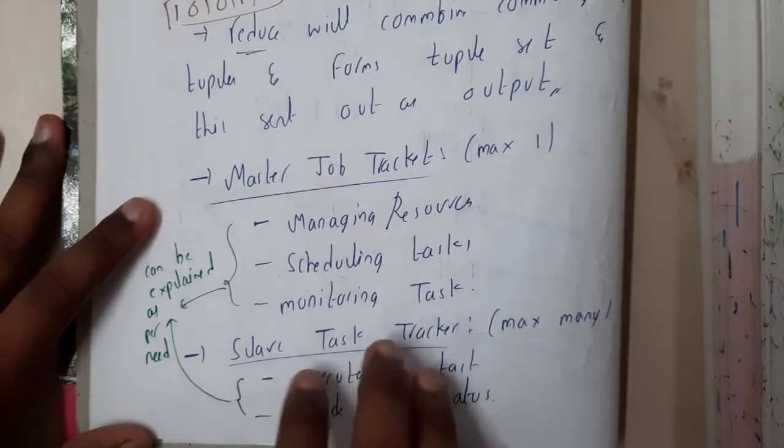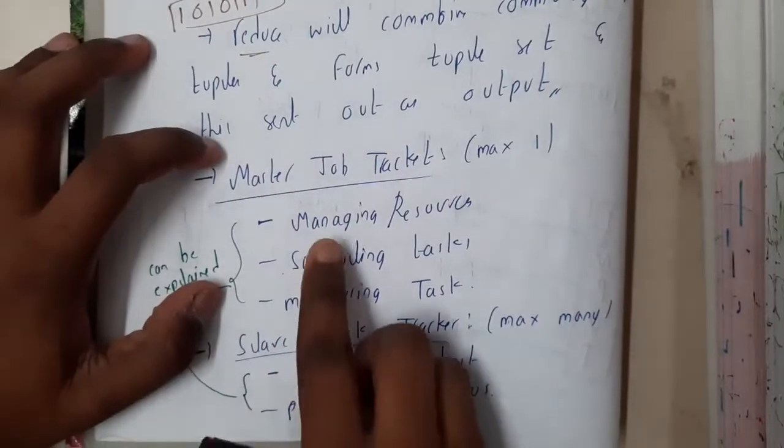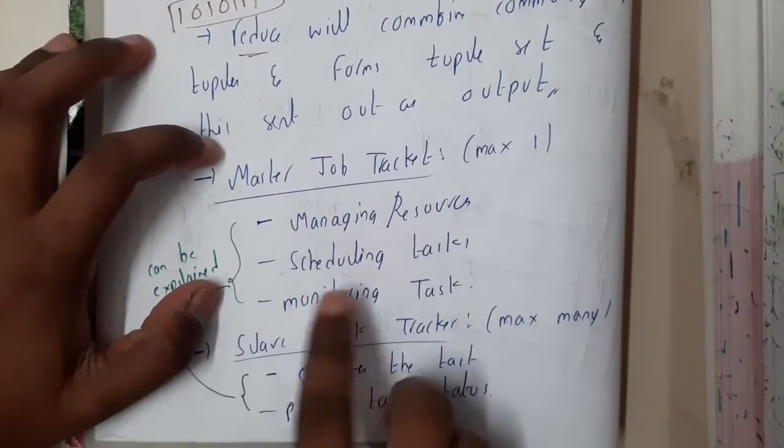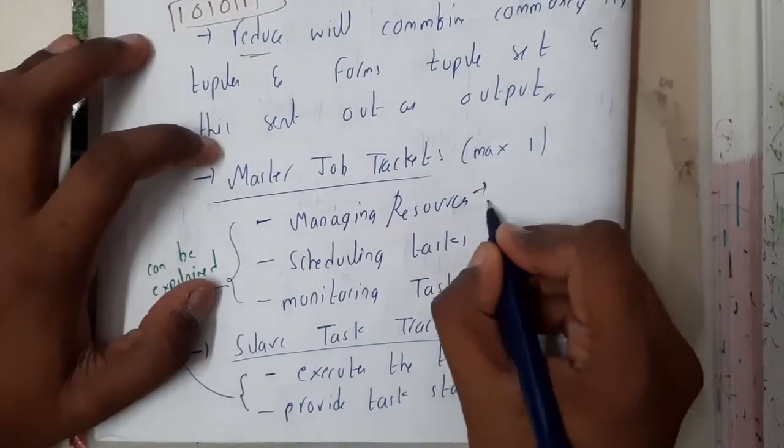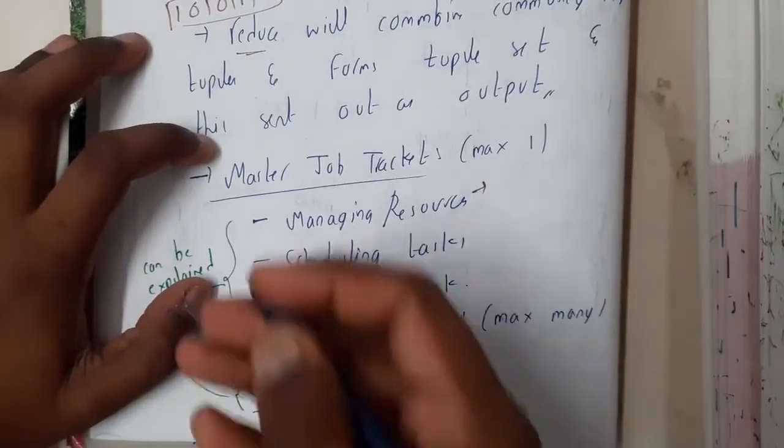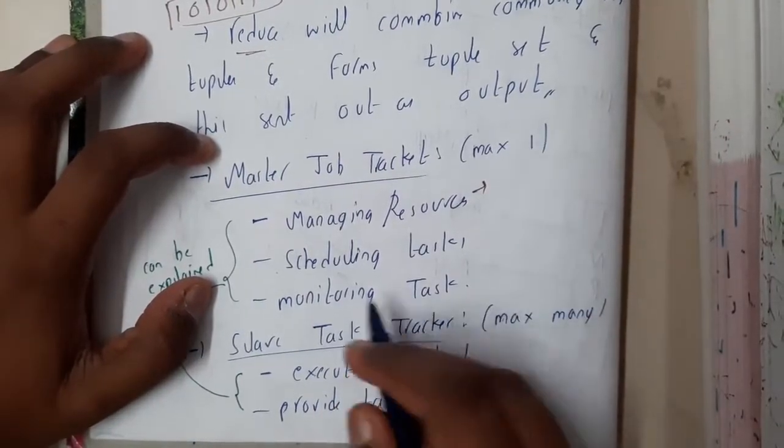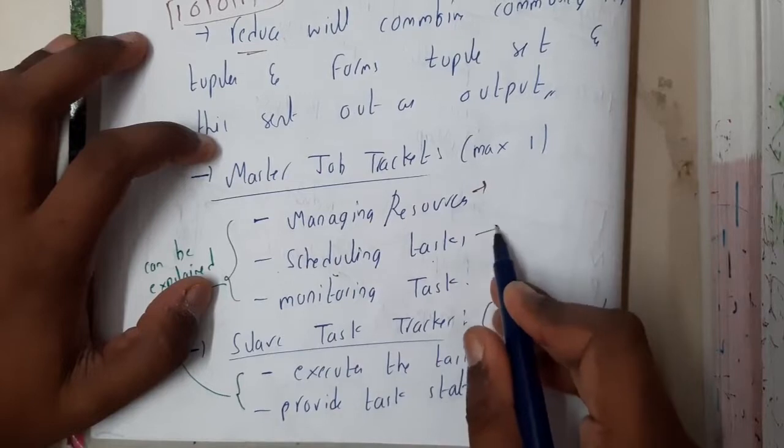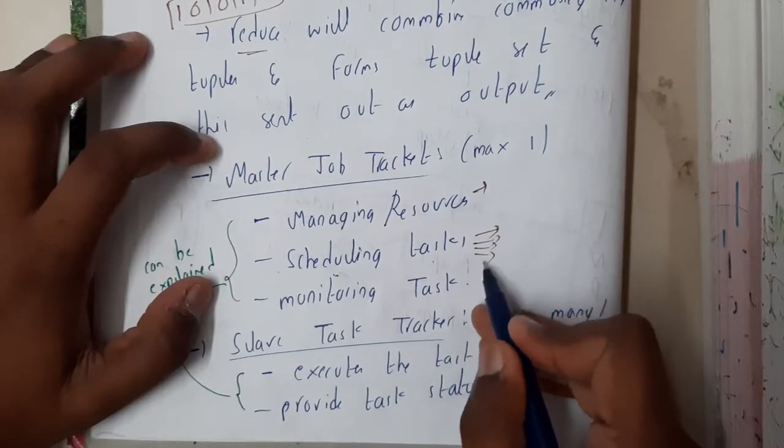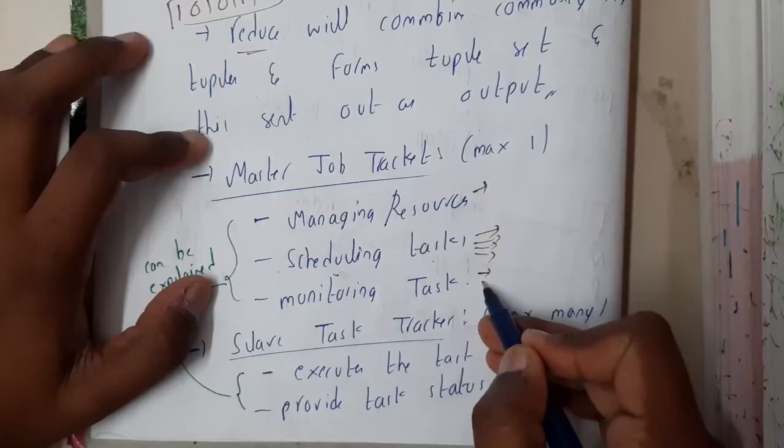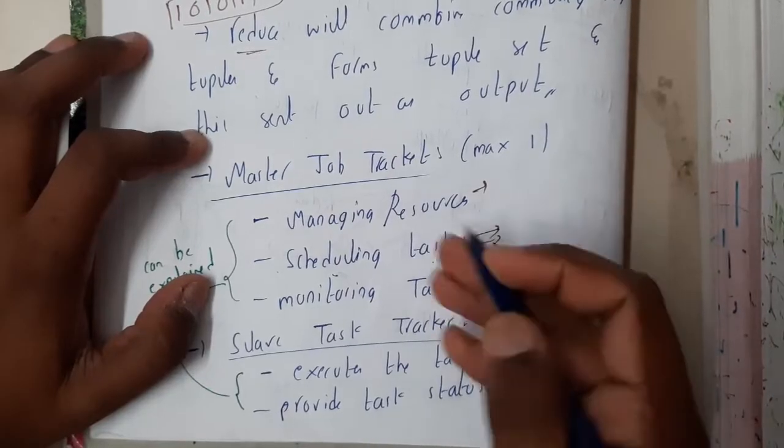What does the master do? It manages resources—allocating resources for the slaves to do particular tasks. It schedules the tasks: first do this, second do this, third do this. And monitoring means getting status—till where are you done, like that it will be asking.